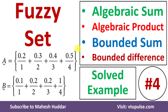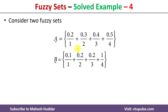Welcome back. In this video I will discuss how to find algebraic sum, algebraic product, bounded sum and bounded difference given the fuzzy sets. This is solved example number 4 — links for other examples are given in the description below. We have been given two fuzzy sets, fuzzy set A and fuzzy set B.